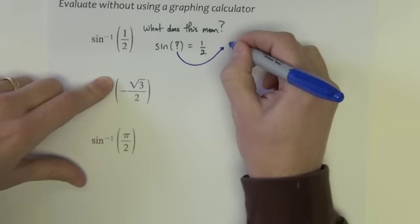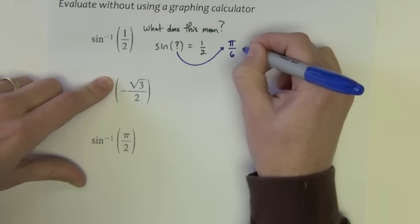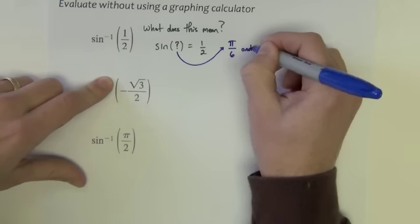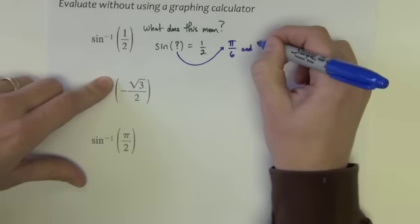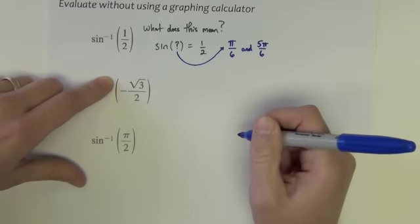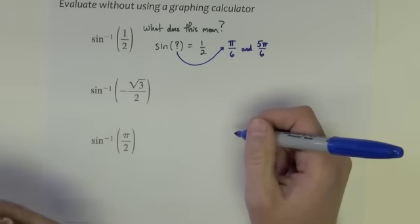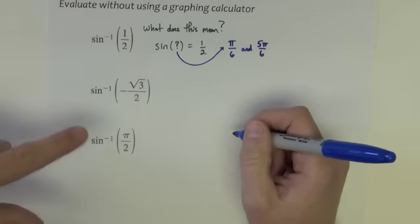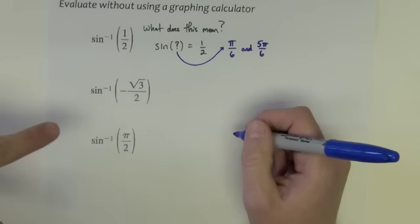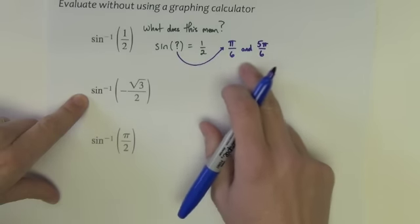Well, there's a y value of 1 half at pi over 6 and a y value of 1 half at 5 pi over 6. If you don't know them and you can't see them that quick, just get out a copy of your unit circle and you'll find them there. Look at the x, y ordered pair of points and you're looking for a y value of positive half. So there's two of them.